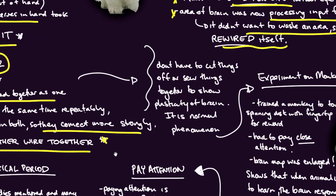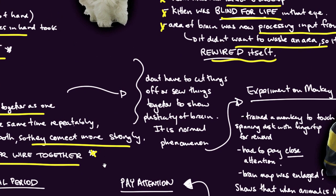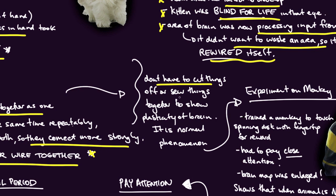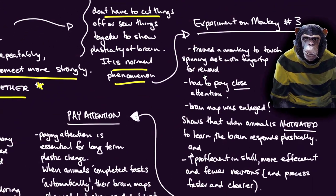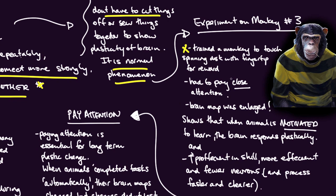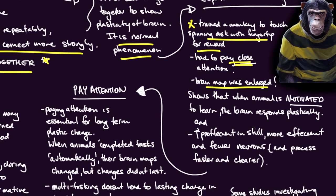We don't always have to be so draconian to see how this works. It's a normal phenomenon, the plasticity of the brain. Experiment number three involving a monkey: a monkey was trained to touch a spinning disc with its fingertip for a reward. It really had to pay close attention to this spinning disc. What they found was that the brain map of the monkey was enlarged. It shows that when animals are motivated to learn, the brain responds plastically. Another point is that the higher the proficiency they get in the skill, the more efficient and fewer neurons they use, and they process faster and clearer.